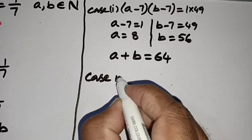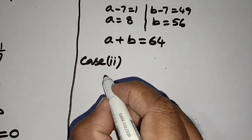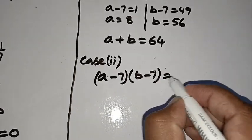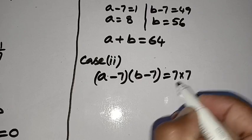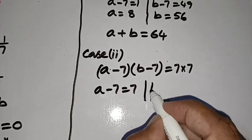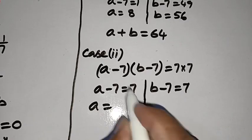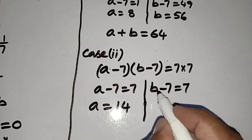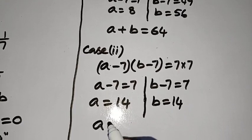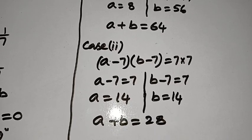In Case 2, A minus 7 times B minus 7 equals 7 times 7. So A minus 7 equals 7 and B minus 7 equals 7, giving A equals 14 and B equals 14. So in this case A plus B equals 14 plus 14, which is 28.